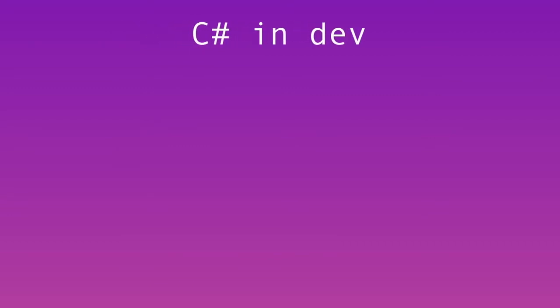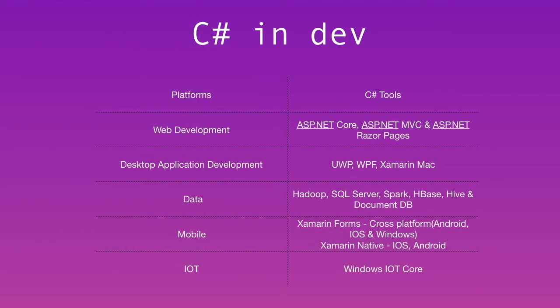Now, C# in development. When comparing Java and C#, there are a lot of extra platforms and extra features added in the C# .NET Core. For web development, we can use ASP.NET Core, which allows hosting applications on Linux-based servers.